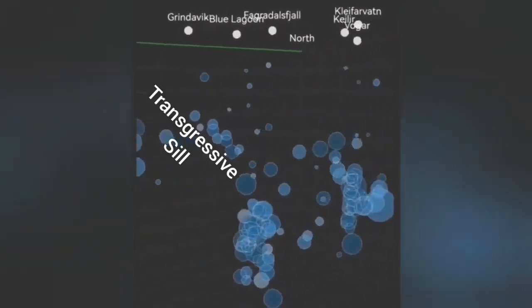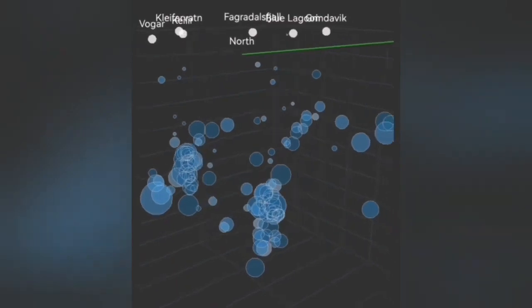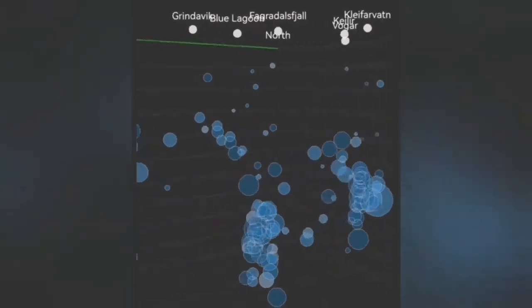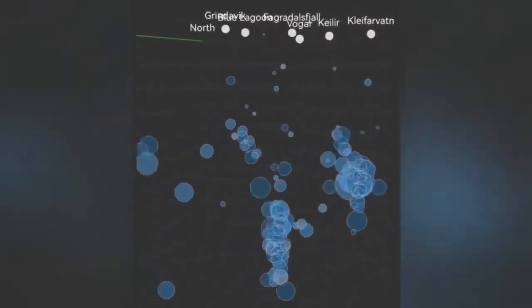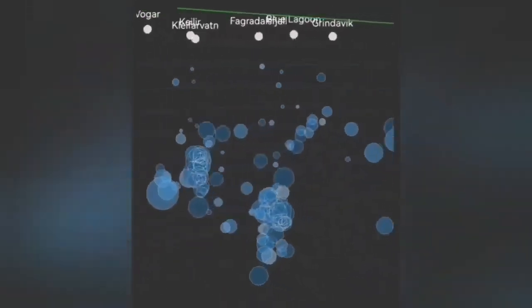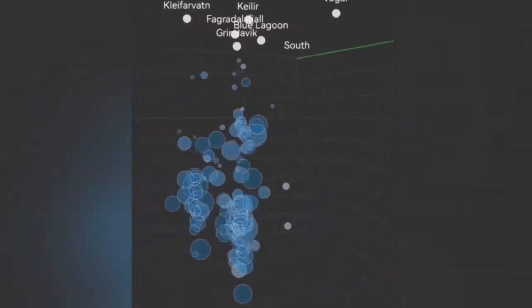We call it a transgressive seal in geological terms - a seal which has an angle and just rises gradually but not vertically. We see this in a few days tremors and earthquake 3D model, and today again I looked at it and it is there and is moving actually upward in that direction as you can see also in this one.